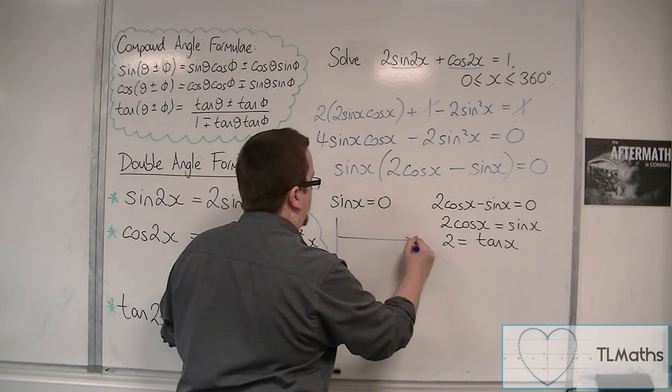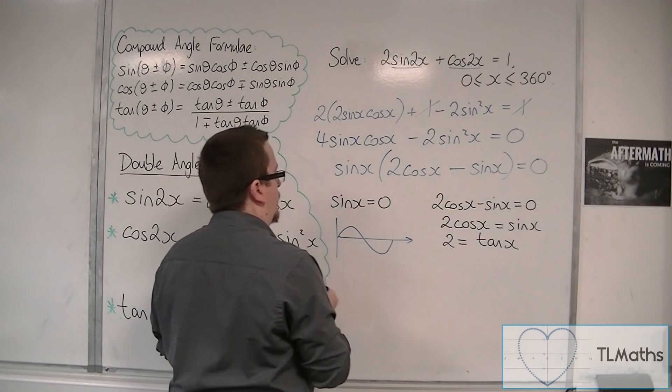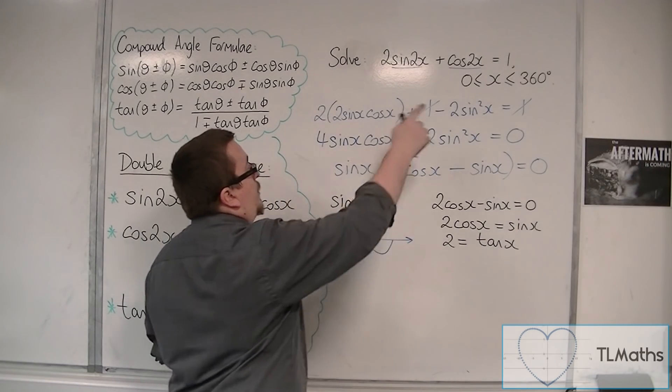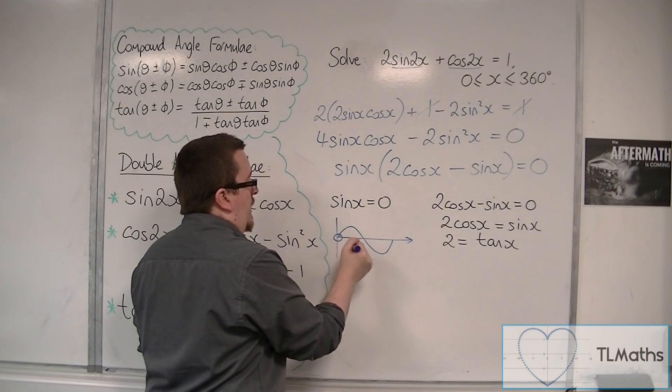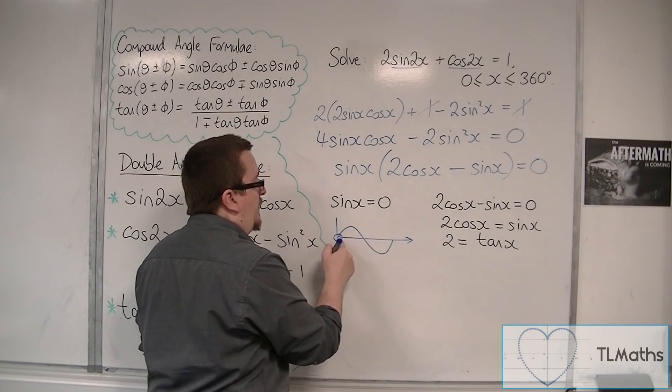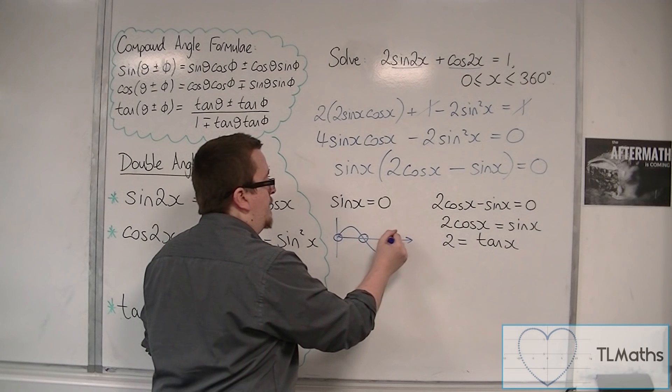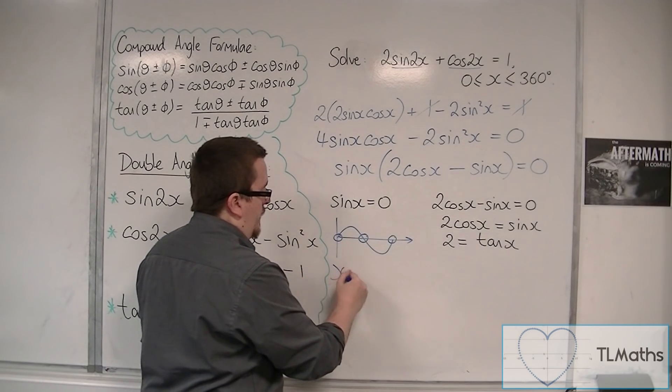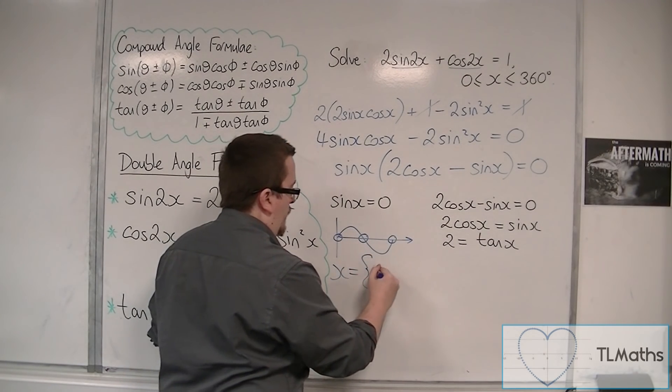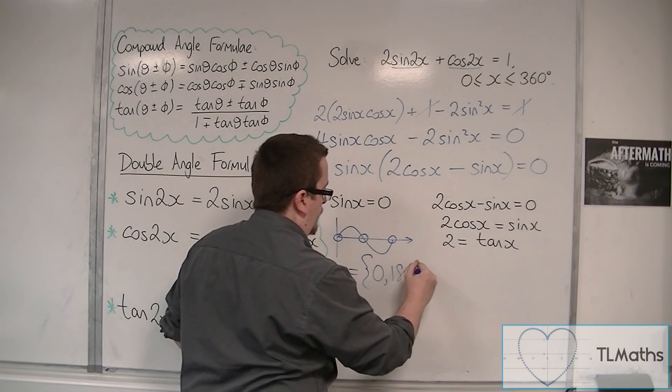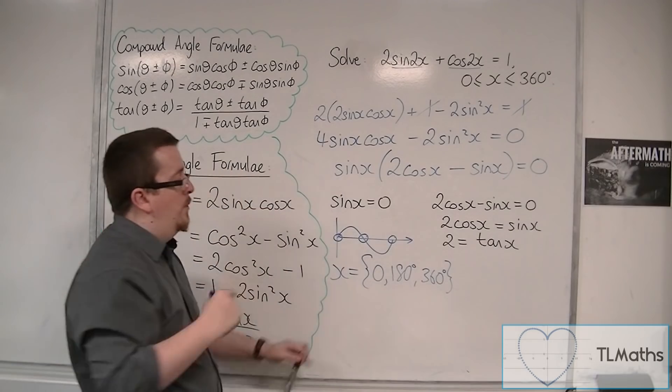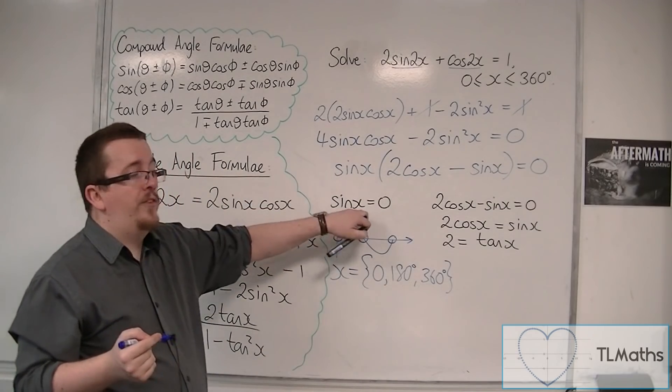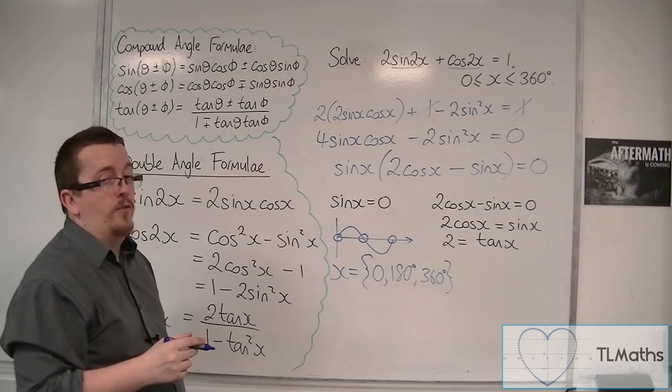A quick sketch of sine. And because we're inclusive of 0 and 360, sine of 0 is 0, so x is 0, 180, or 360. So, there are three solutions to sin(x) = 0, between 0 and 360.